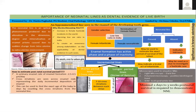How can we estimate postnatal survival period? In primary enamel, the rate of enamel formation is 2.5 to 4.5 micrometers per day. Short striations are seen across the enamel rods representing the daily incremental deposition of enamel. This can be used to find the exact age of a baby in days by counting the cross striations from the neonatal line.